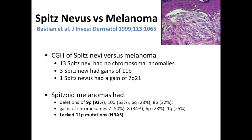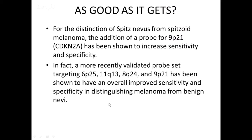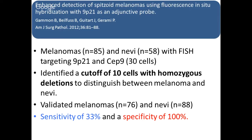Going back to 1999, Bastion had shown through CGH that the majority of benign Spitz nevi don't have any chromosomal abnormalities — some can have gains in 11p, which we've discussed — but spitzoid melanomas tend to have deletions in 9P in 92% of cases, which is very important. So for the diagnostic distinction of Spitz nevus from spitzoid melanoma, the addition of a 9P21 probe — the CDKN2A gene corresponding to P16 tumor suppressor — may be beneficial, and apparently is very important for spitzoid lesions in particular.